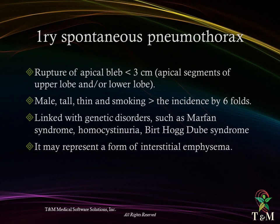Primary spontaneous pneumothorax follows rupture of apical blebs less than 3 cm, either located in the apical segment of the upper lobe or lower lobe, usually seen in males who are tall, thin, and smokers, linking with genetic disorders such as Marfan syndrome, homocystinuria, and Birt-Hogg-Dubé syndrome. It may represent a form of interstitial emphysema.